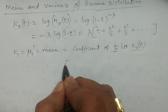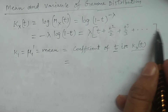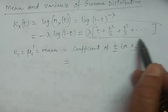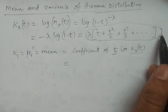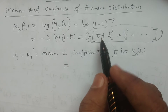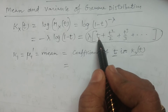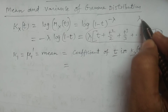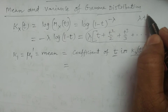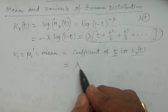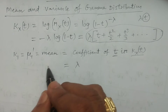So here, in the cumulant generating function, you have to find the coefficient of t. Looking at the terms, the only term in t is lambda times t. So the coefficient of t is lambda. Therefore, the mean of the gamma distribution is lambda.